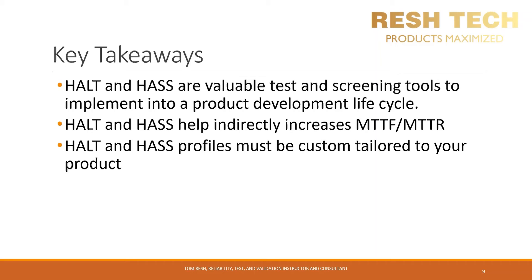The key takeaways from this video are: HALT and HASS are valuable test and screening tools to implement into a product development life cycle. HALT and HASS help indirectly increase MTTF and MTTR. HALT and HASS profiles must be custom tailored to your product. Creating a robust reliability and validation plan is imperative to helping your company reduce warranty costs and maintain or even improve brand equity. Adding HALT and HASS to your overall robust test plan will help your company achieve this goal. If you need help building your HALT and HASS test programs or developing your reliability and validation test plan, feel free to reach out to me at one of the links below.